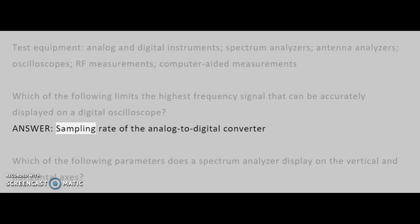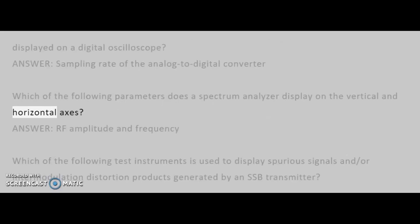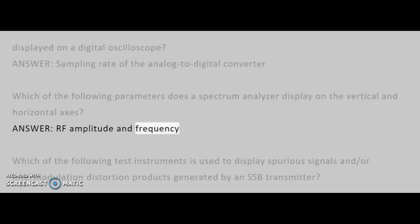Answer: The sampling rate of the analog-to-digital converter. Which of the following parameters does a spectrum analyzer display on the vertical and horizontal axes? Answer: RF amplitude and frequency.